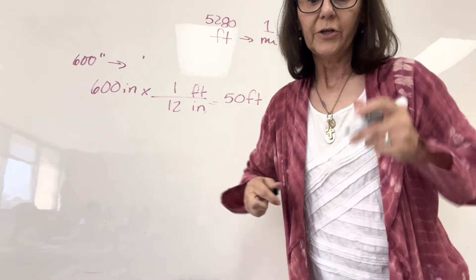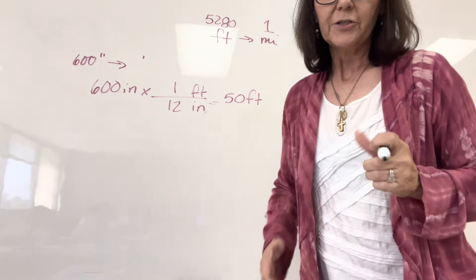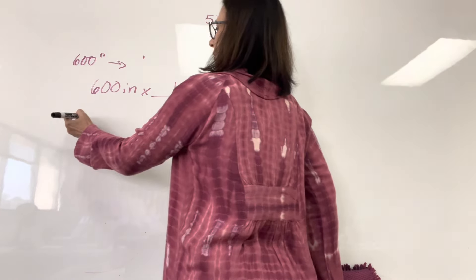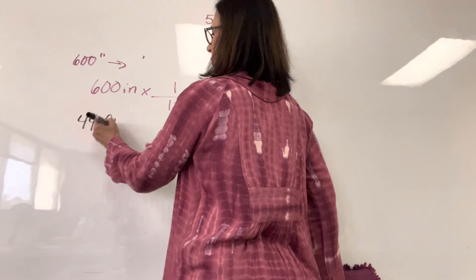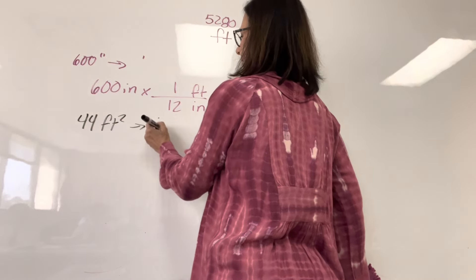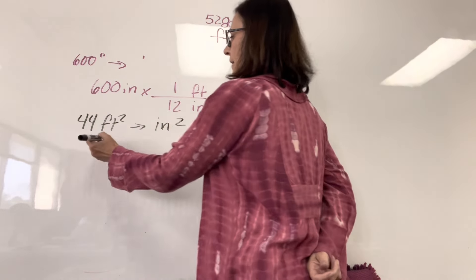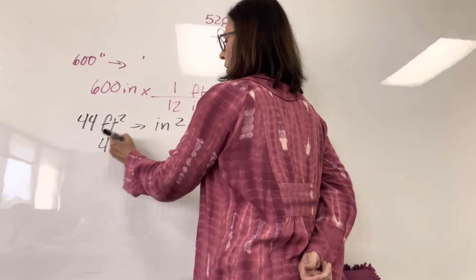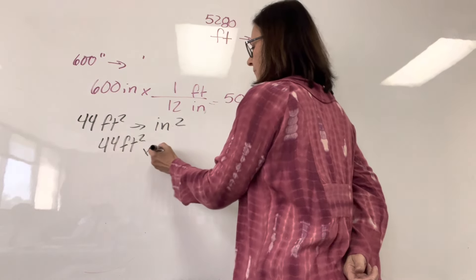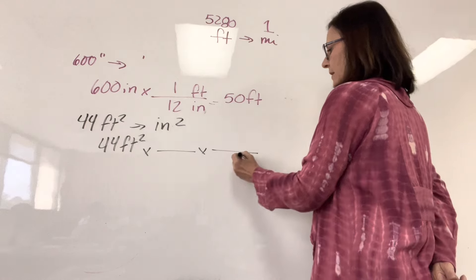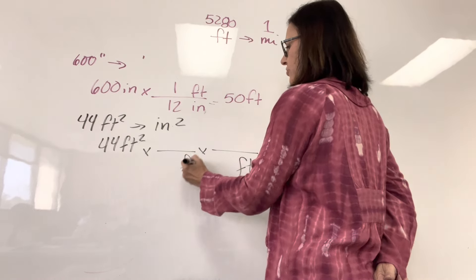Look at example two. Use unit multipliers to convert 44 square feet to inches squared. All right. So I begin with 44 feet squared. How many multipliers do I need? Two.